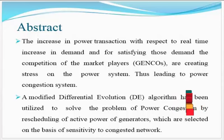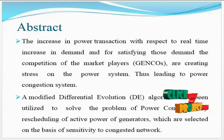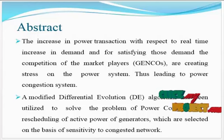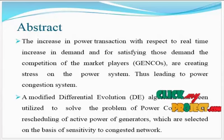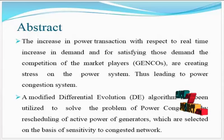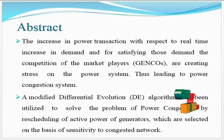Disadvantages: the genetic algorithm doesn't handle non-differentiable, non-linear, multimodal functions. It is also not suitable for distributed parallel implementation and has inconsistent convergence. So for that purpose, we are going to propose a modified differential evolution algorithm to solve the problem of congestion by rescheduling of generators on the basis of sensitivity factor of the power system.